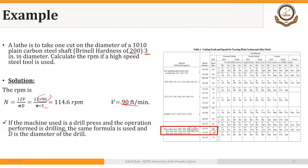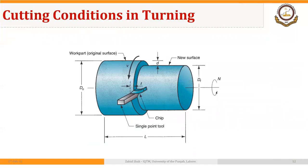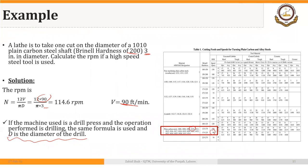An important point: if the machine is a drill press, the same formula is used but D is the diameter of the drill bit. In the case of reaming, D is the diameter of the reamer. We will use this cutting speed formula in the following slides to calculate machining time for turning, drilling, and milling.